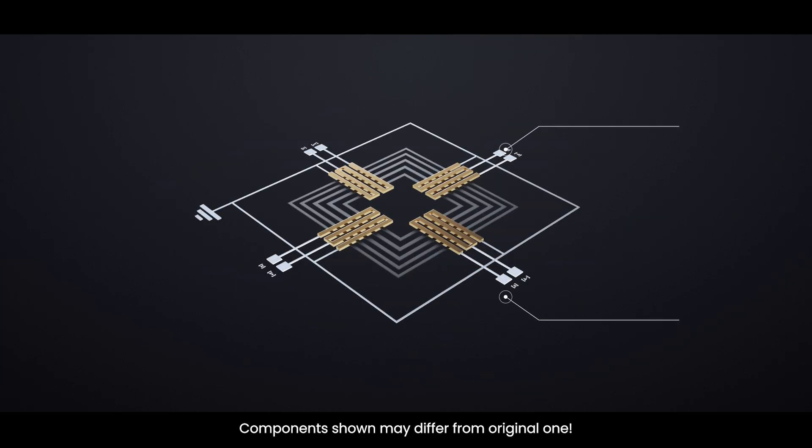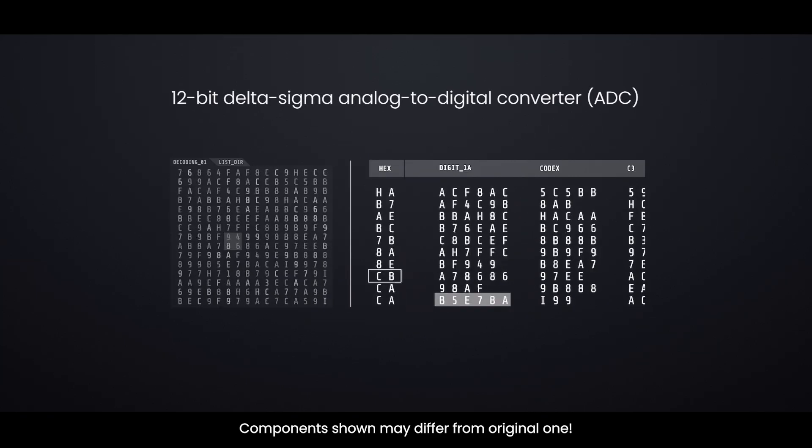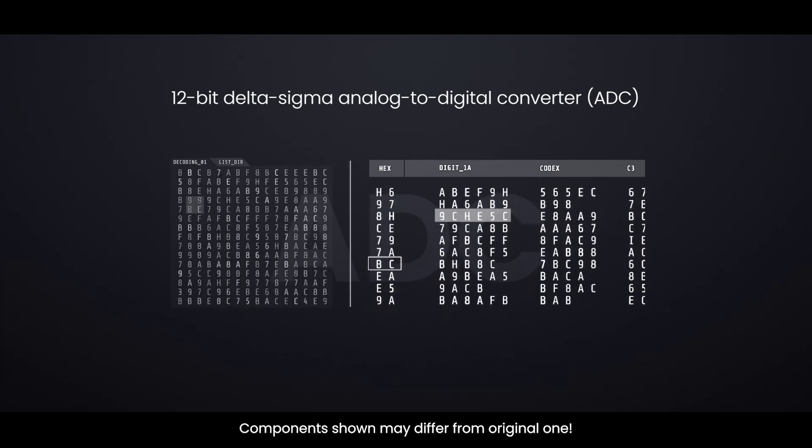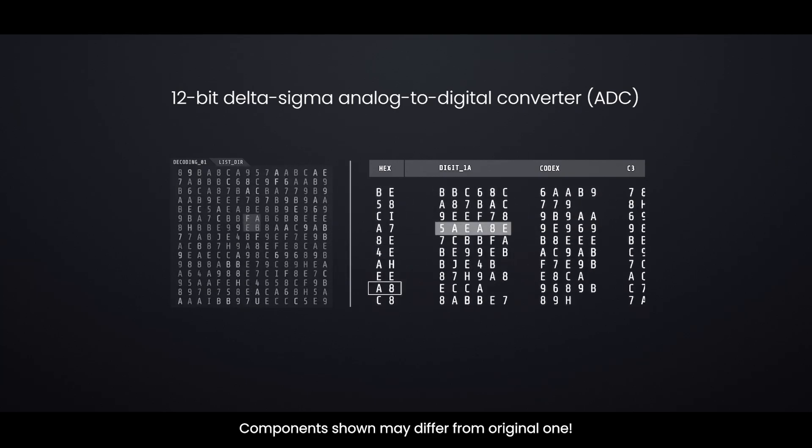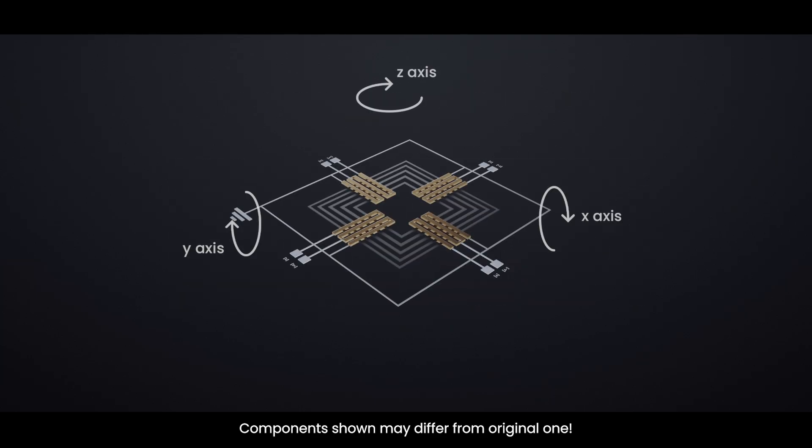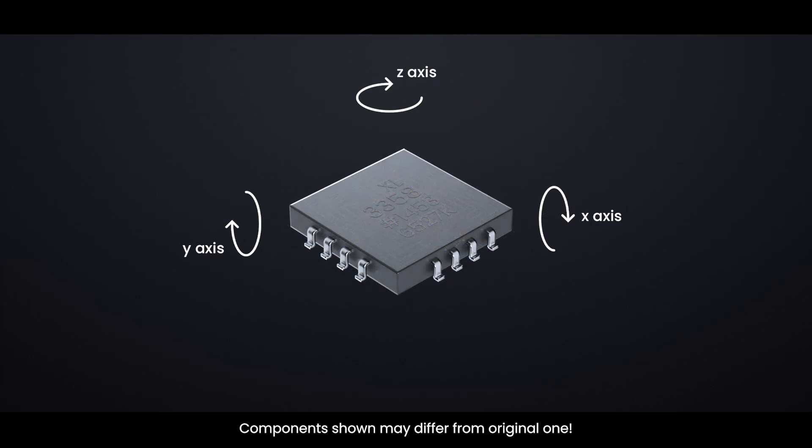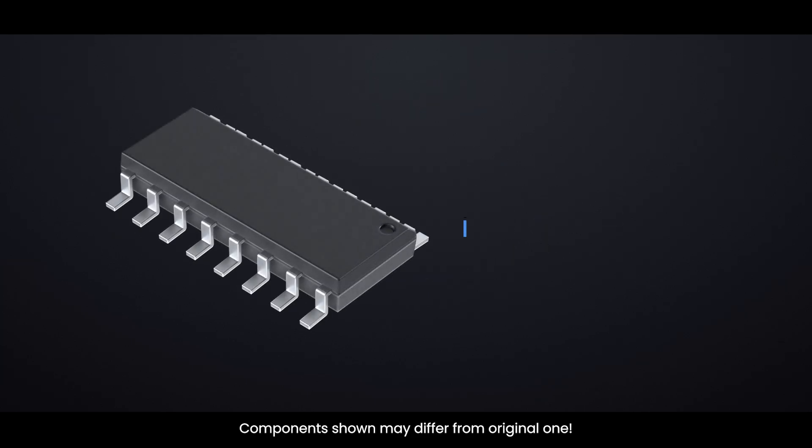The small analog voltage signals from each axis are then sent through a high-precision amplifier and converted into digital values using a 12-bit delta-sigma analog-to-digital converter, ADC. These digital outputs represent the strength and direction of the magnetic field along each axis and are transmitted to a microcontroller via the I2C communication protocol.